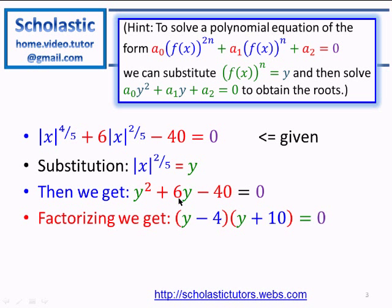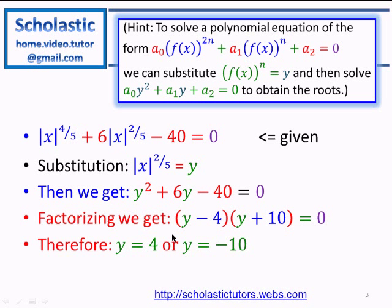So the factors are (y minus 4)(y plus 10). Here, 4 times 10 is 40, made negative because we need positive 6y in the middle: 10y minus 4y gives plus 6y. So the roots are y equal to 4 or y equal to negative 10.